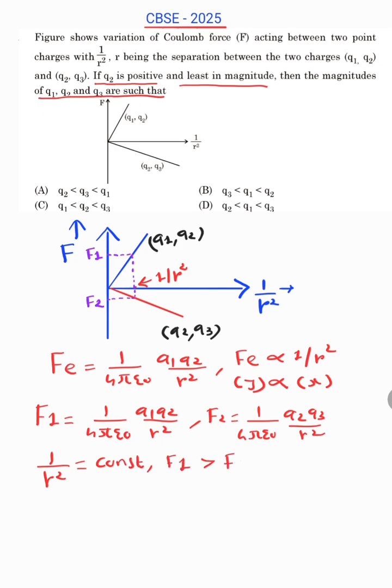So we can say that Q1, Q2 is greater than Q2, Q3. Q2 is cancelled. So Q1 is greater than Q3 or you can write Q3 is less than Q1.